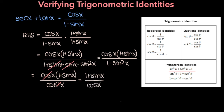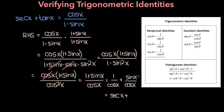We can break this up into two separate fractions: 1 over cosine x and sine x over cosine x. Looking at the identity table, 1 over cosine x is secant x, and sine x over cosine x is tangent x. So we have secant x plus tangent x, which is the left-hand side of our equation. In general, when one side of the equation is a fraction with 1 minus or plus sine x or cosine x in the numerator or denominator, you're going to want to multiply by the conjugate of that term.